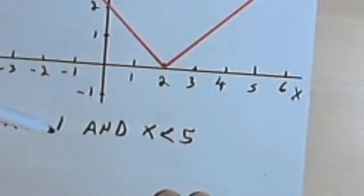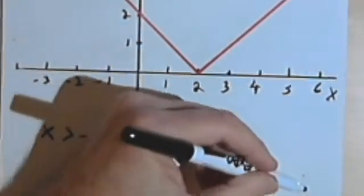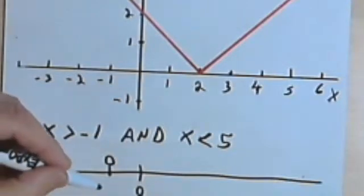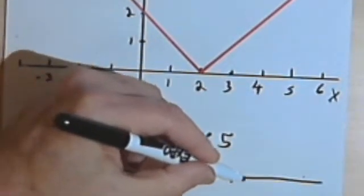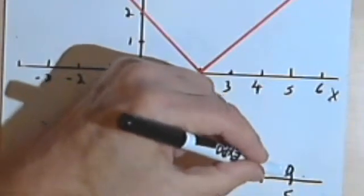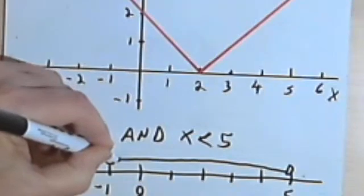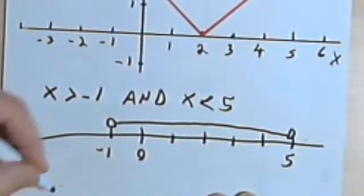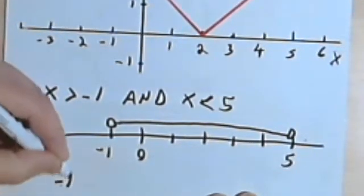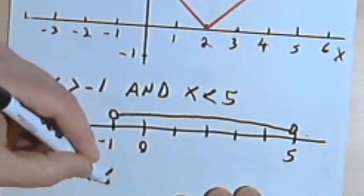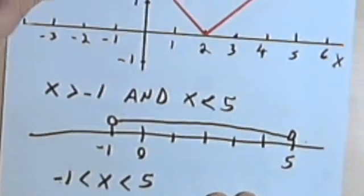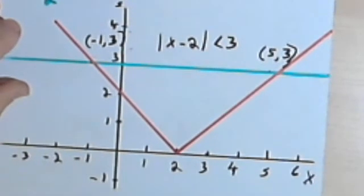x is greater than negative 1 and x is less than 5. Putting that onto a number line, I'm going to have an open circle at negative 1 and an open circle at x equals 5, and I want all the places between those two open circles. Writing it as interval notation: negative 1 is less than x is less than 5. I hope this made sense and helped. Do a bit of practice with this to make sure you're comfortable with it. Take care, I'll see you next time.